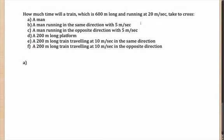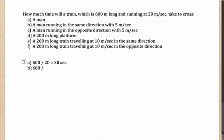The first question: how long will the 600-meter train running at 20 m/s take to cross a man? The length the train needs to cover is 600 meters, at a speed of 20 m/s, so it will take 30 seconds.